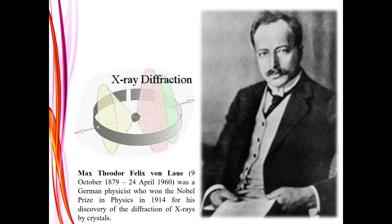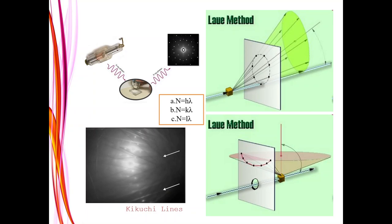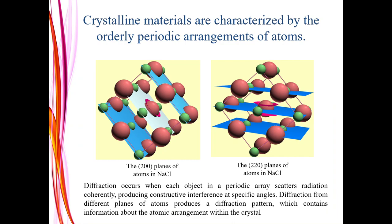The next person to discuss in diffraction is Max Theodor Felix von Laue, a German physicist who won the Nobel Prize in Physics in 1940 for his discovery of the diffraction of X-rays by crystals. He devised equations to describe how diffraction occurs: a·N = Hλ, b·N = Kλ, c·N = Lλ. Crystalline materials are characterized by orderly periodic arrangement of atoms, and diffraction occurs when each object in the periodic array scatters radiation coherently, producing constructive interference at specific angles. The diffraction from different planes of atoms produces a diffraction pattern containing information about the atomic arrangements within the crystal.